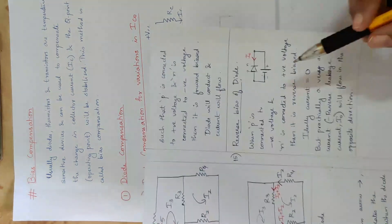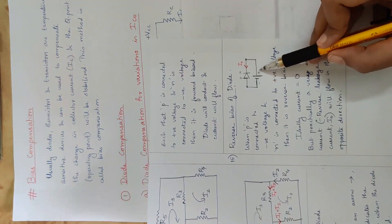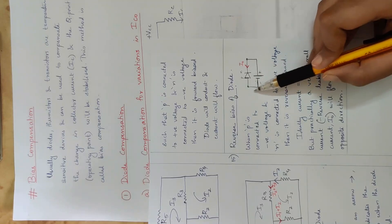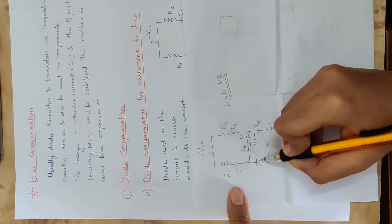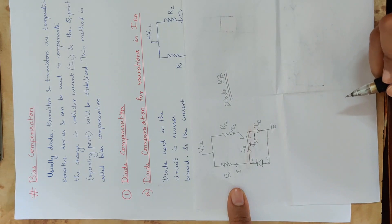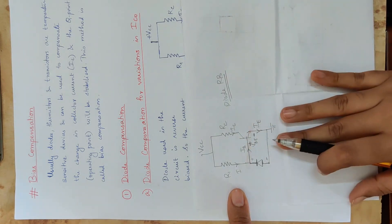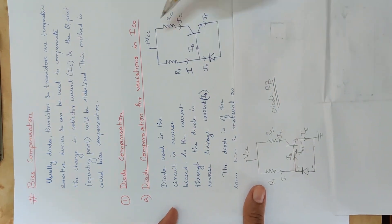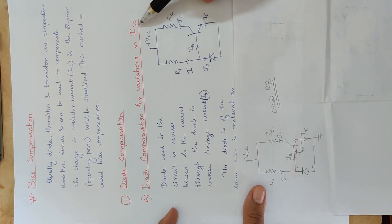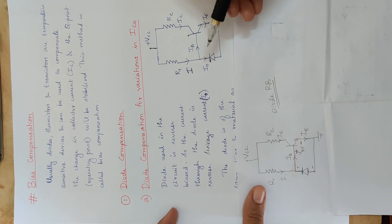The diode is reverse biased: the N side is connected to plus, and P is connected to minus — opposite polarity. This is the full circuit for diode compensation for variation in ICO. The leakage current will be compensated using another leakage current. The diode is reverse biased and connected in the circuit.